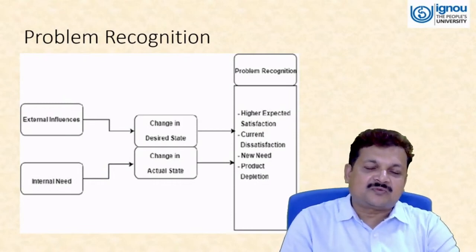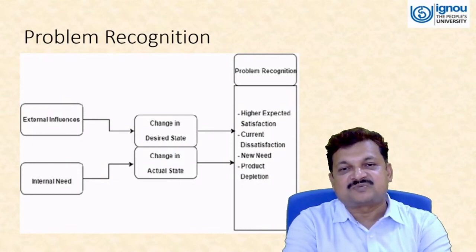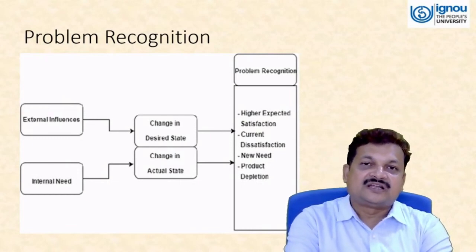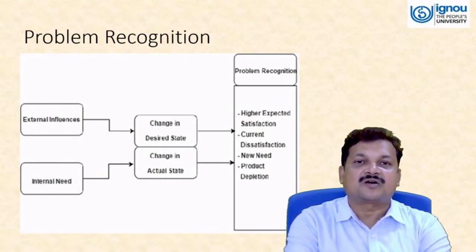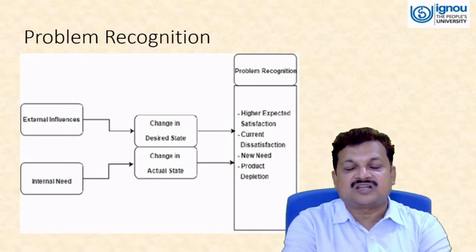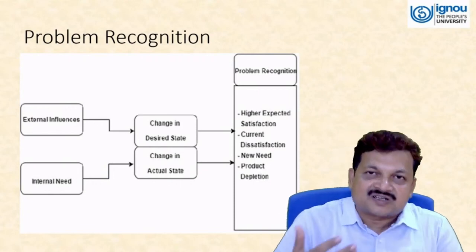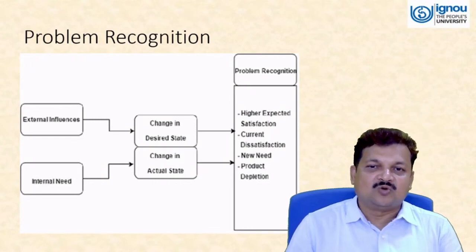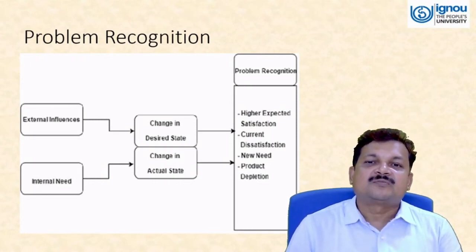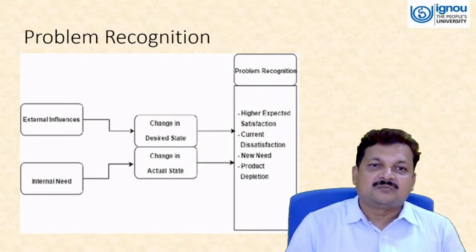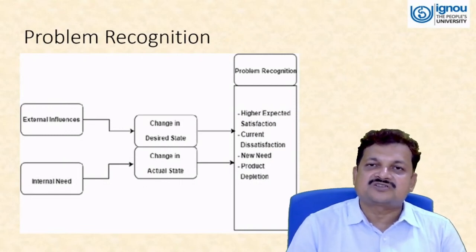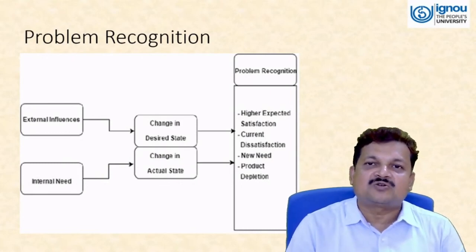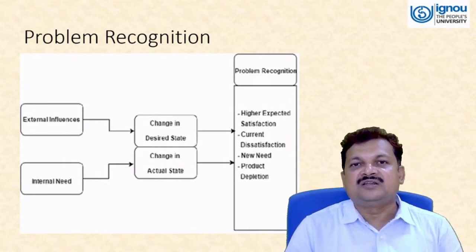Current dissatisfaction is a second cause. If you have frequent dissatisfaction with a product, your expectation level may drop to a minimum. But when a product performs better than expected, your expectation level rises. Current dissatisfaction with a product or service leads you to seek at least some level of satisfaction from a new product, which also leads to problem recognition.